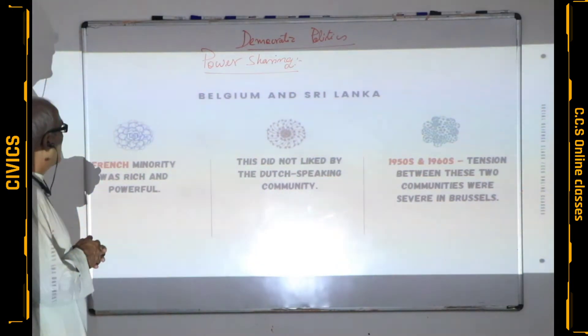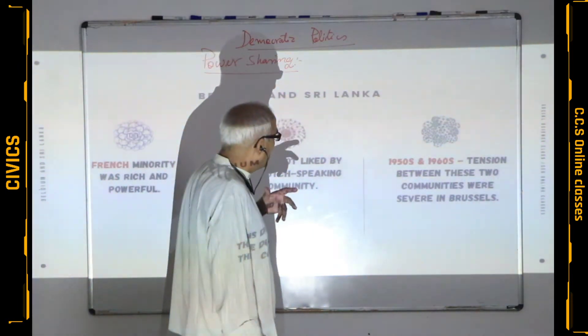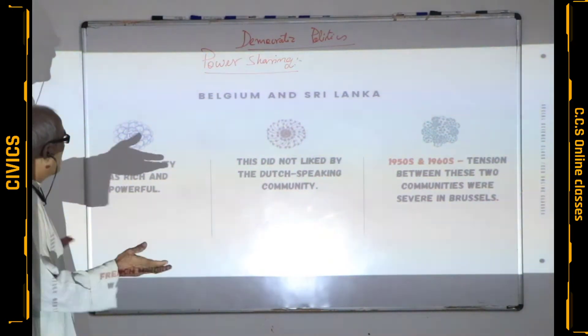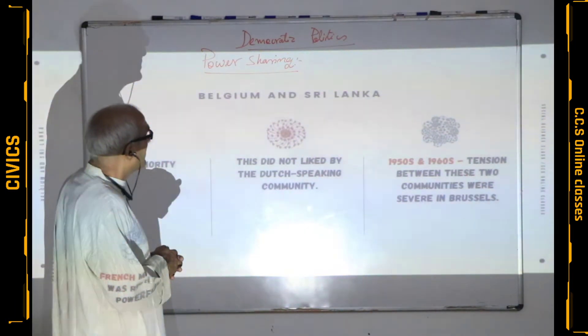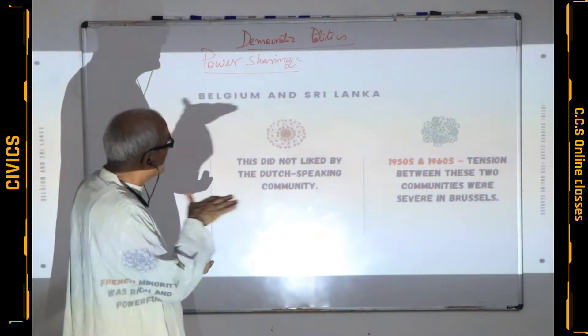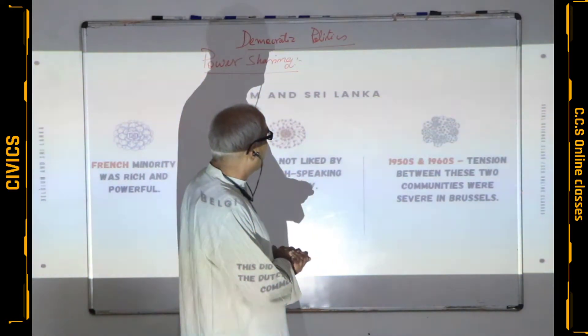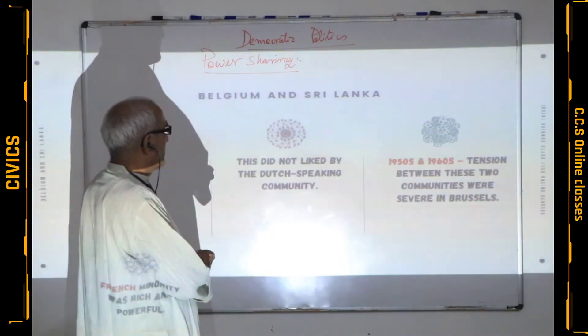The French minority — what was their status? The French minority was rich and powerful, having control over resources. The Dutch speaking, those who are in majority, did not have this control over resources. This is why it became a region of conflict — the Dutch speaking community did not like this, because the French, being in minority, had control over the resources. Due to this, during the 1950s and 60s, tensions between these two communities were commonly found in the country.